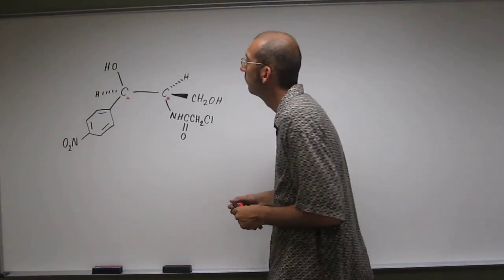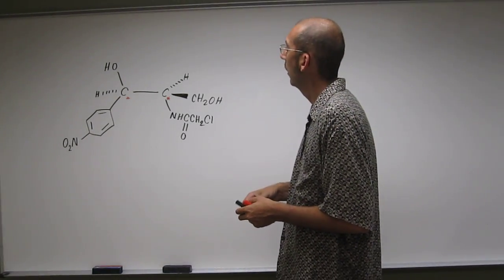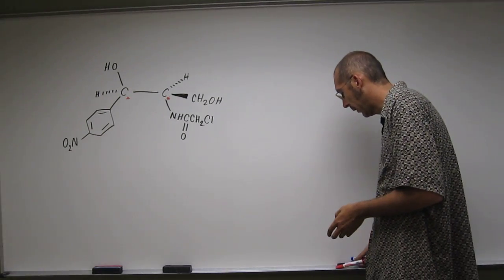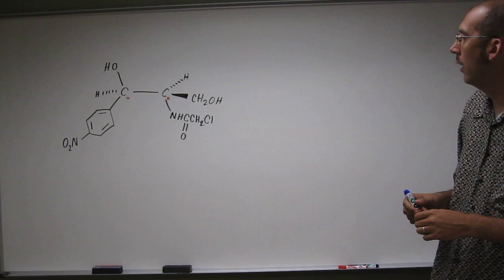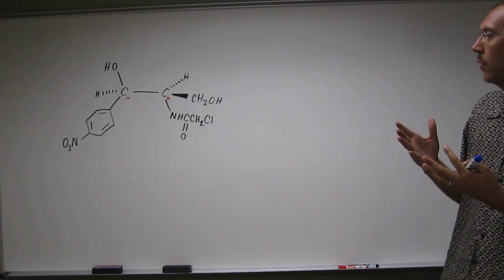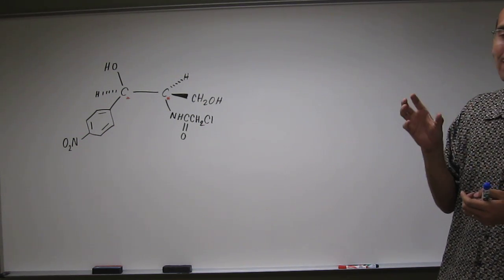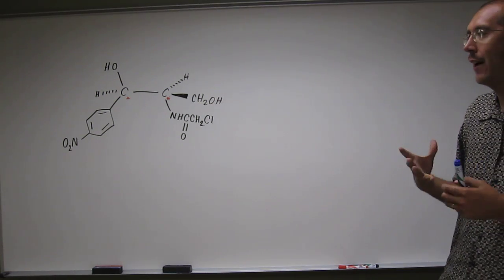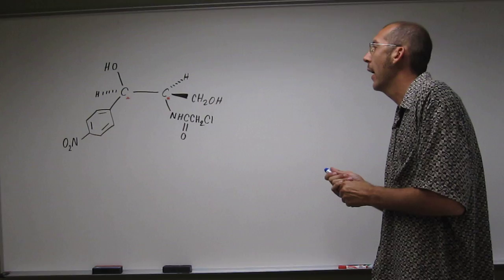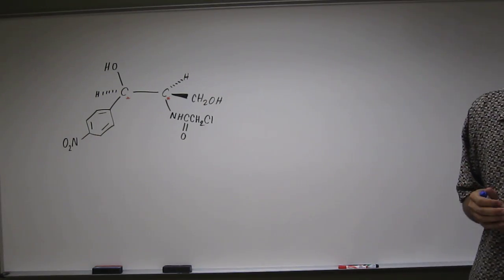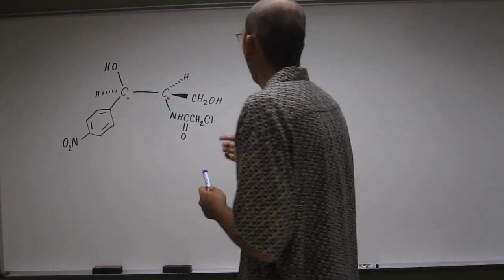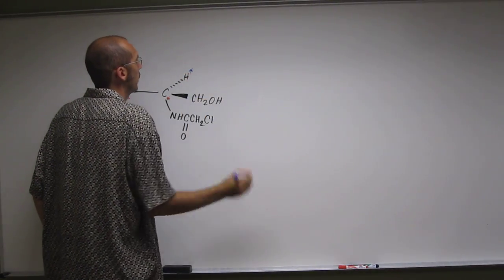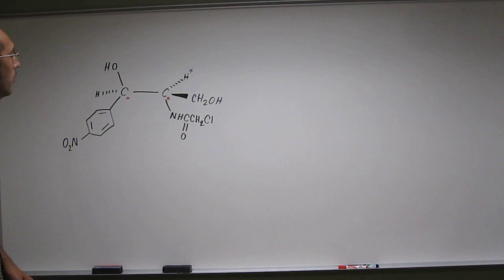So let's start over here. Remember, we have to assign priority to these stereocenters. The highest priority is going to be the atom that is located highest on the periodic table, or with the highest atomic number. And the lowest atomic number will be the lowest priority. So if you've got a hydrogen on there, it's always going to be number four. You could put four there already.